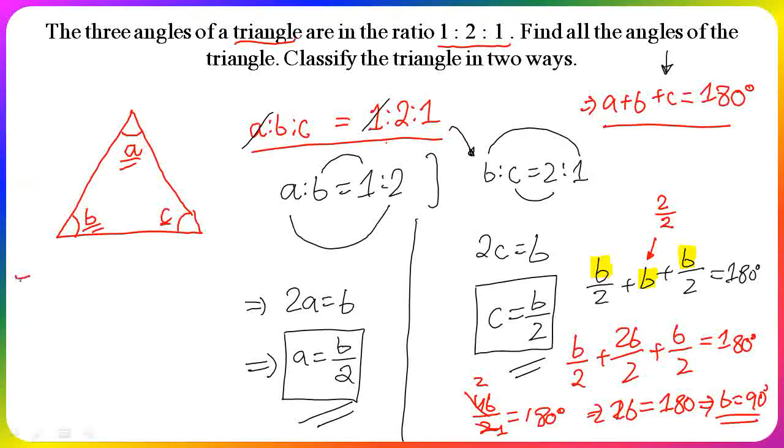Now we have B = 90 degrees. Using this, we get A = 90/2 = 45 degrees.